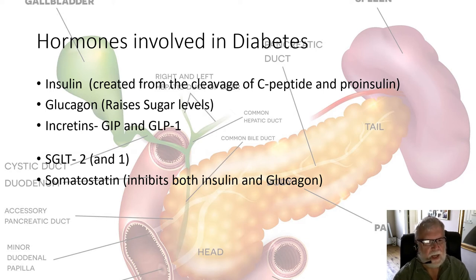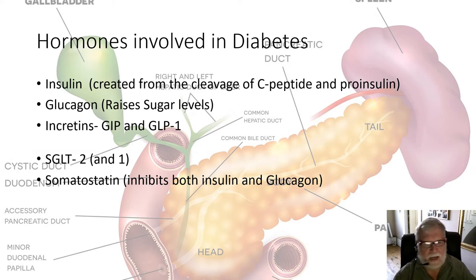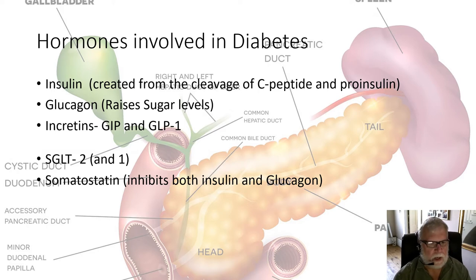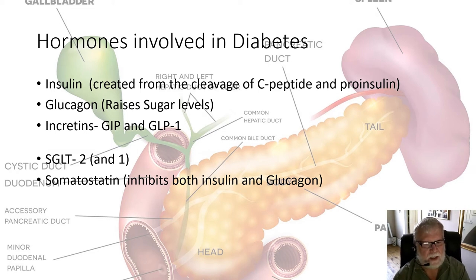SGLT-2 is found inside the kidneys and causes the reabsorption of sugar. If you block that, patients will excrete substantially more sugar in the urine, lowering blood sugar. The medicines that block SGLT-2 tend to cause weight loss, lower blood pressure, and improve blood sugars. Somatostatin is a relatively newer hormone in the context of diabetes — medicines can impact it, and it inhibits both insulin and glucagon, which is an interesting effect.